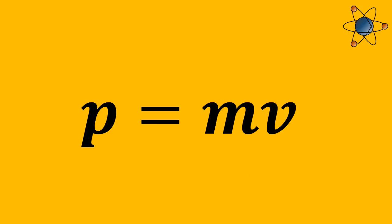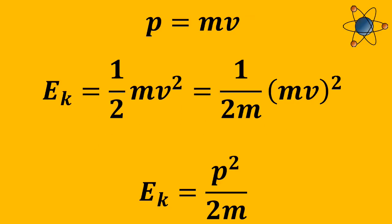So we define the momentum of the carrot, p, as its mass, m, times its velocity, v. So we can very easily substitute the momentum into the kinetic energy equation, a half mv squared, and we get kinetic energy is momentum squared over 2m.